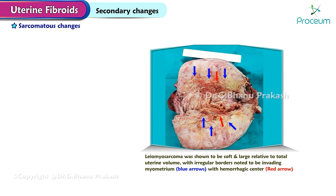Sarcomatous changes, although rare, may occur in less than 0.1% of cases. The usual type is leiomyosarcoma.